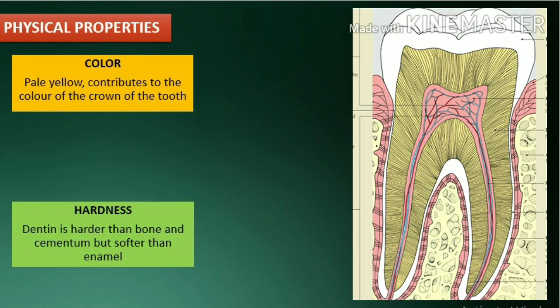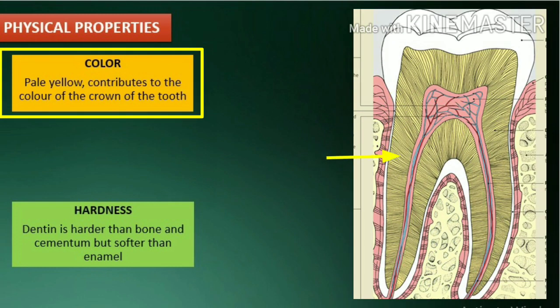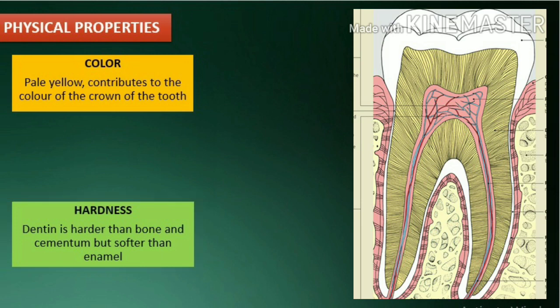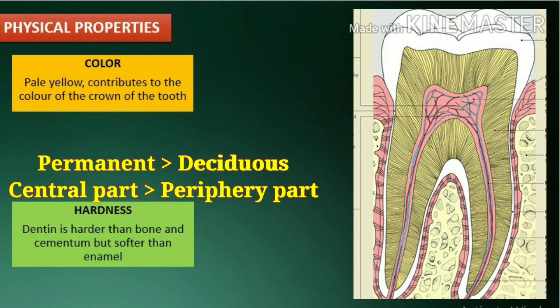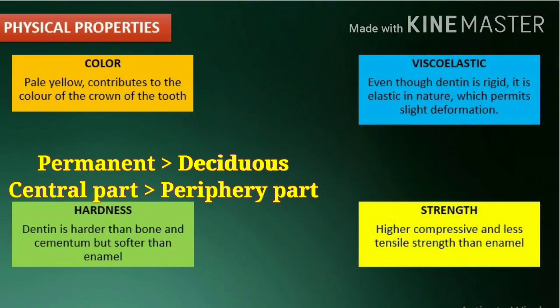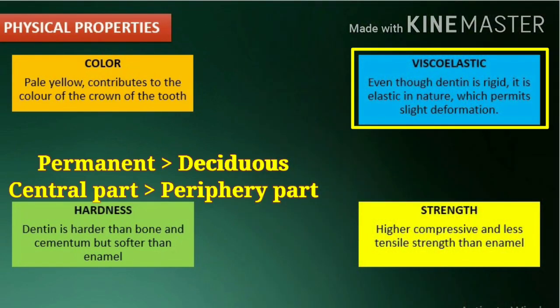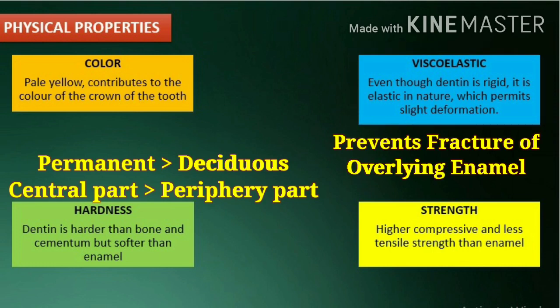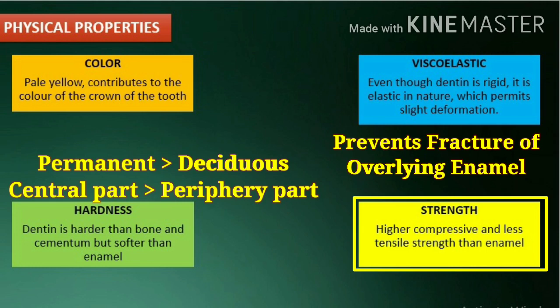Physical properties. Dentin, which is pale yellow, contributes to the color of the crown of the tooth. Dentin is harder than bone and cementum but softer than enamel. Dentin is harder in permanent teeth than in deciduous teeth. The dentin in the central part of the tooth is harder than that in the periphery. Even though dentin is rigid, it is elastic in nature, which permits slight deformation. Dentin has a higher compressive strength than enamel while the tensile strength of enamel is more than that of dentin.